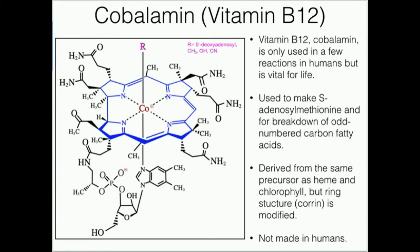Vitamin B12 is really strange in the sense that in humans it's not used for very many reactions. In general, there are only two notable reactions that actually use vitamin B12. The first one is methionine synthase, which takes pre-existing homocysteine and converts it to methionine. The other is methylmalonyl-CoA mutase, which is used in beta-oxidation of odd-numbered carbon fatty acids. Vitamin B12 deficiency causes anemia, and if you are deficient in B12 for a long period of time it can cause some serious issues, even though it's only used in two reactions.